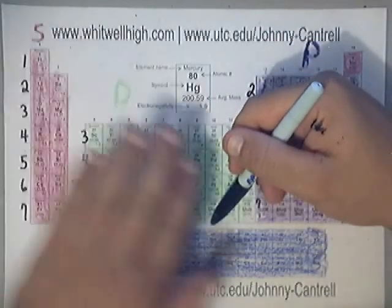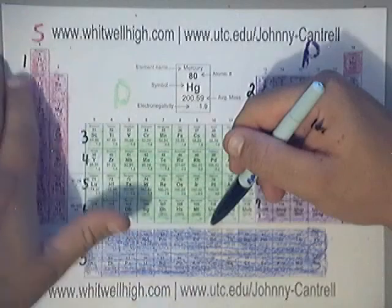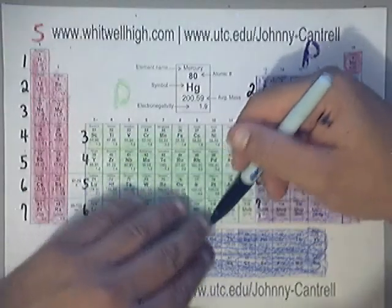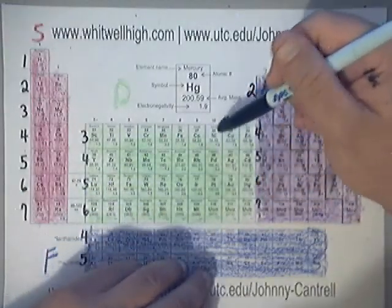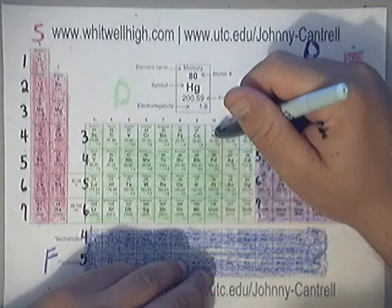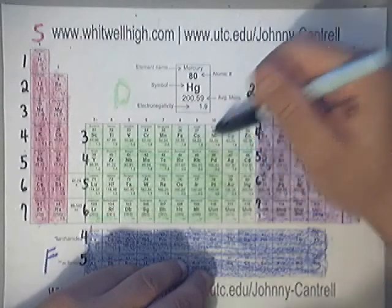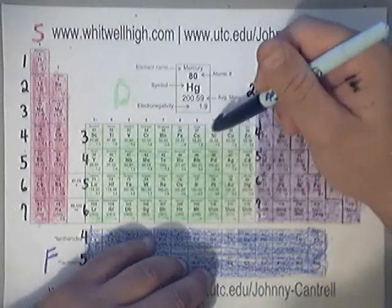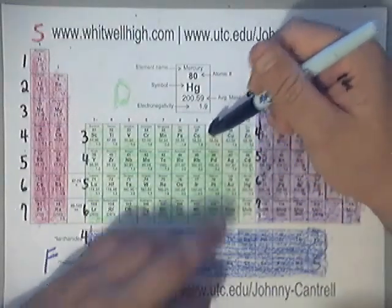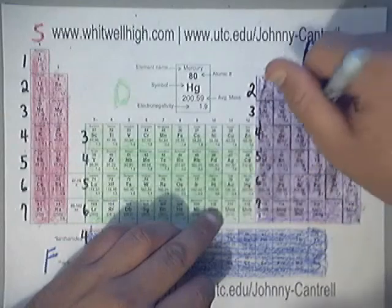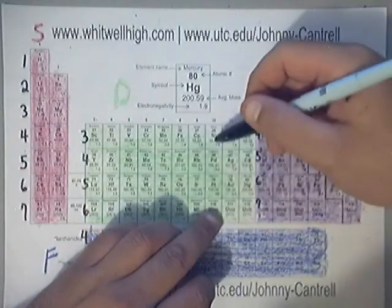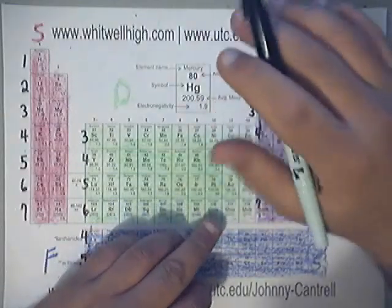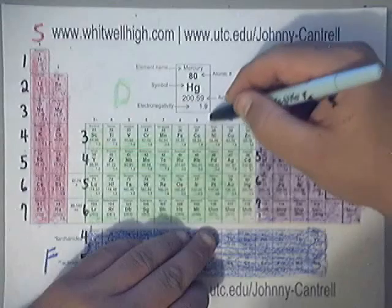We're assuming that all of these valence electrons are for neutral atoms — meaning no charge. They're not cations or anions. They're just neutral.